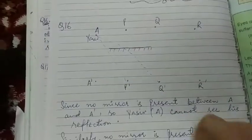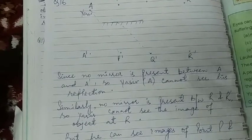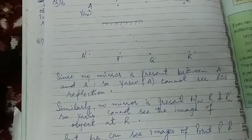Since there is no mirror present between A and A dash, Yasir cannot see his reflection, because for reflection we have to have a mirror, whether a plane or a spherical mirror. Since there is nothing in between, the reflection won't be possible.